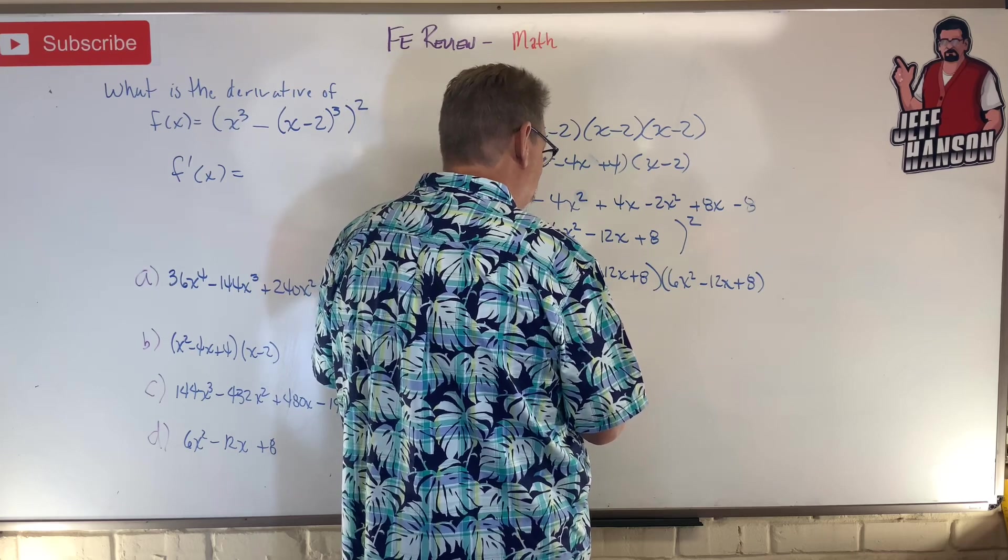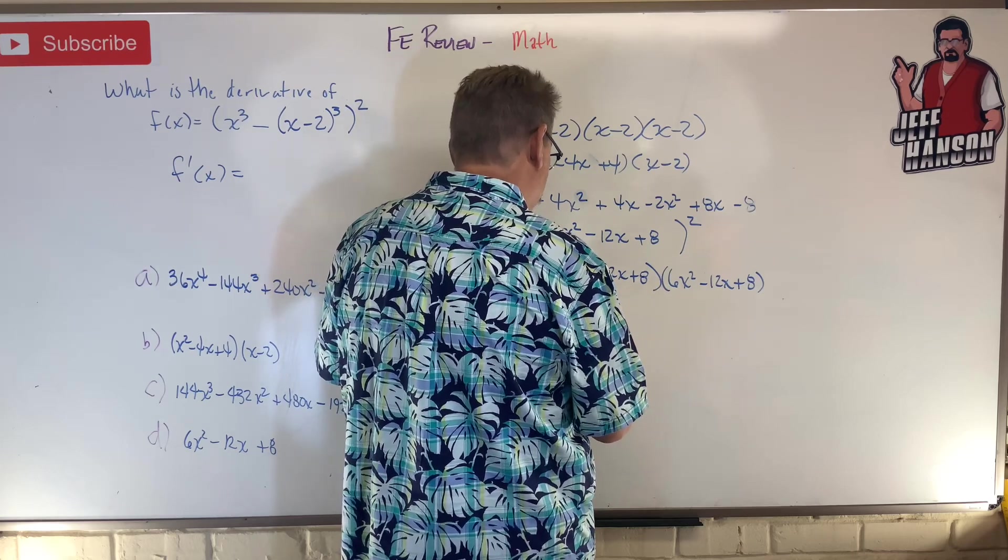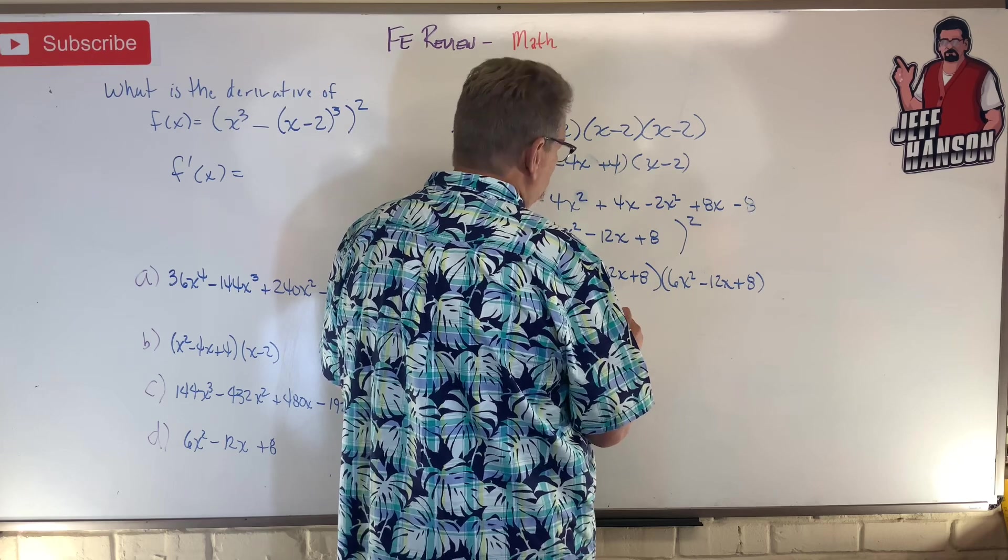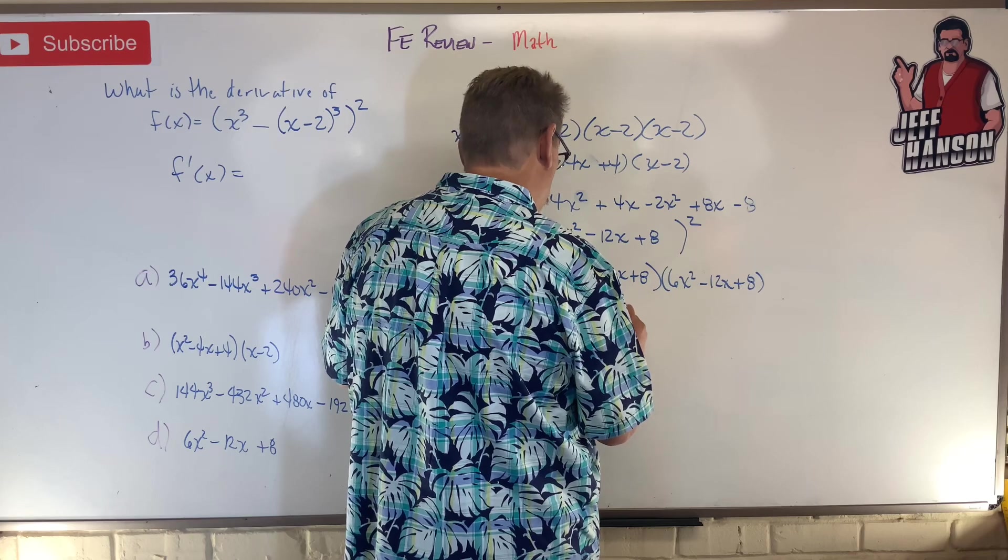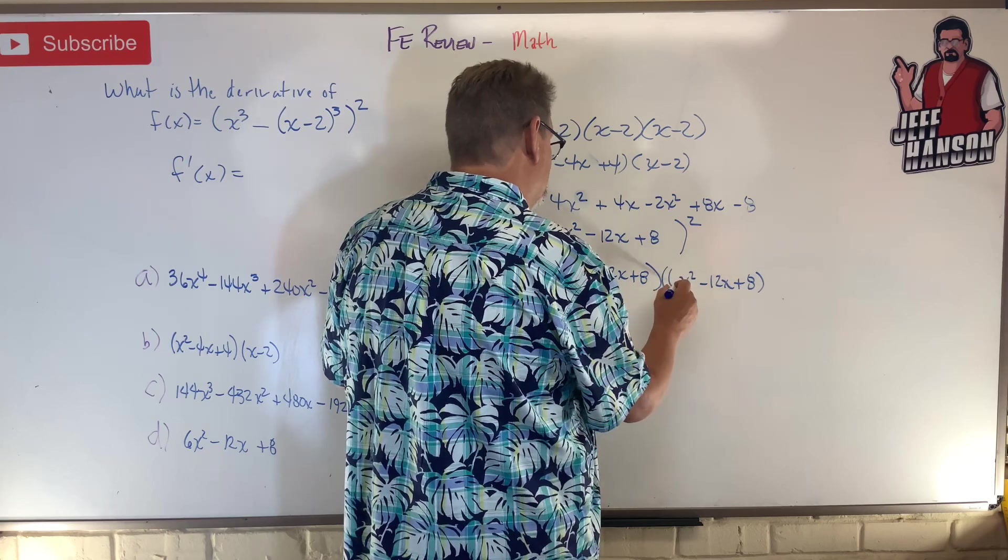That's 36x⁴ minus 72x³, and then 6x times that's +48x². Then I'm doing the minus 12.